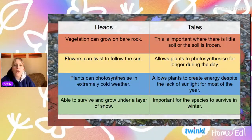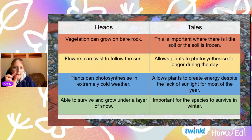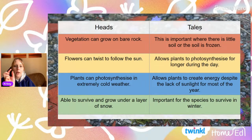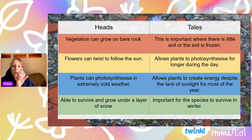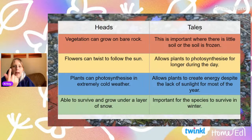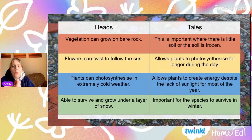Should we go through the answers? Vegetation can grow on bare rock, and the reason is that if there's very little soil or the soil is frozen, some plants have adapted to be able to grow on bare rock — which is absolutely incredible. You can sometimes even find those special types of plants in a garden centre. Flowers can twist to the sun, and that's important because it allows them to photosynthesize for longer during the day. They can photosynthesize in extremely cold weather, meaning that even if it's really cold with a lack of sunlight, they can still create the energy they need to survive.